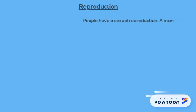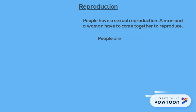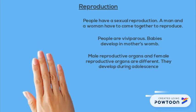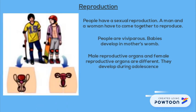And reproduction. People have sexual reproduction, which means that a man and a woman have to come together to reproduce. People are viviparous — they develop in the mother's womb. Male and female reproductive organs are different and they develop during adolescence. Here you can see a picture with the different reproductive organs.